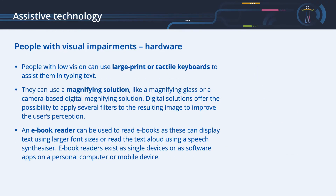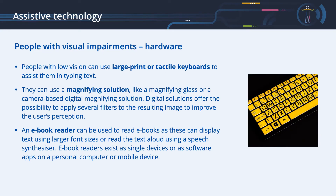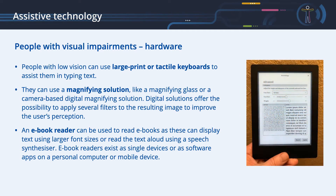Assistive technology for people with visual impairments — Hardware. People with low vision can use large print or tactile keyboards to assist them in typing text. They can use a magnifying solution, like a magnifying glass or a camera-based digital magnifying solution. Digital solutions offer the possibility to apply several filters to the resulting image to improve the user's perception. An eBook reader can be used to read eBooks, as these can display text using larger font sizes or read text aloud using a speech synthesizer. eBook readers exist as single devices or as software apps. For more information on how to create an accessible eBook file, please refer to the EPUB chapter.